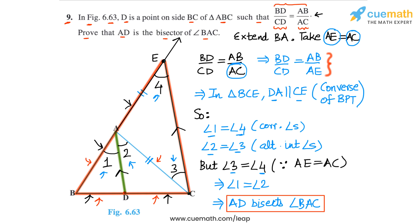As an exercise, it would be very helpful to compare this proof with the proof of the angle bisector theorem and see how this is the converse of that proof. Doing this comparison will really help you understand this proof better.